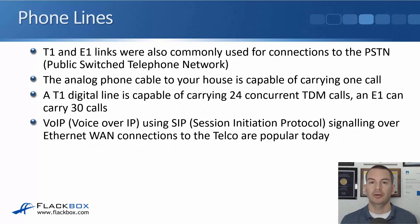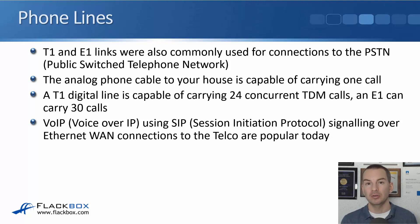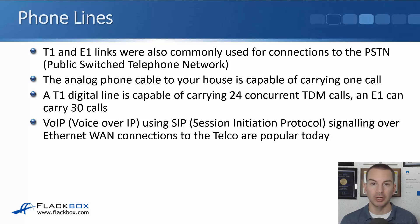One last thing — not required for the CCNA exam, but included so you don't get confused in real-world deployments: T1 and E1 links were also commonly used for connections to the phone network, the PSTN — the public switched telephone network. An analog phone cable to your house can carry only one call, but if a company connects a T1 or E1 to the phone network, they can carry much more. A T1 is a digital line that can carry 24 concurrent calls, and an E1 can carry 30 calls. This is beneficial as fewer cables are needed into the building, and it can come with additional phone services.